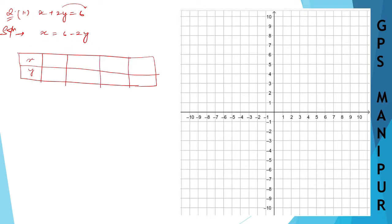When y equals 0, x will equal 6 minus 2 times 0. So 6 minus 0 is 6. When y is 0, x is 6.